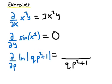2 is brought down, so we have 2q times p to the 1 (2 minus 1). So we have 2qp, and of course the derivative of the 1 here is 0.